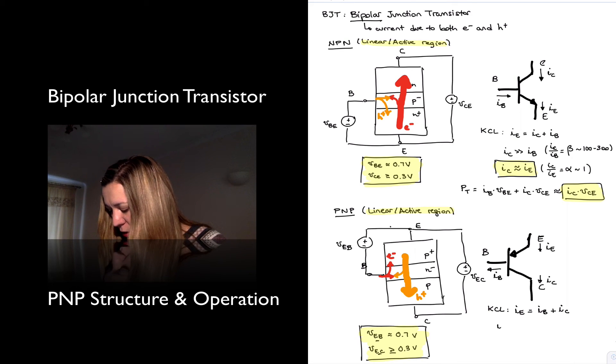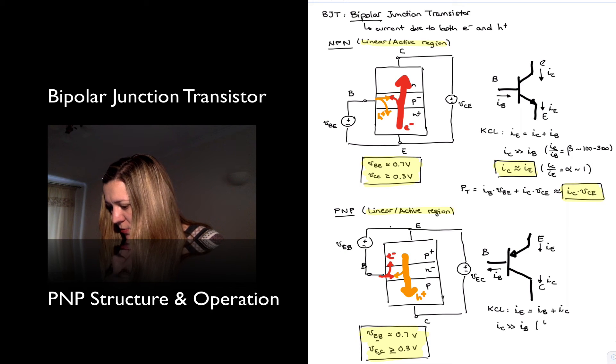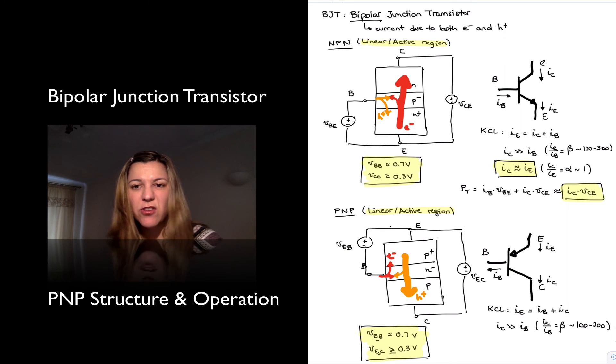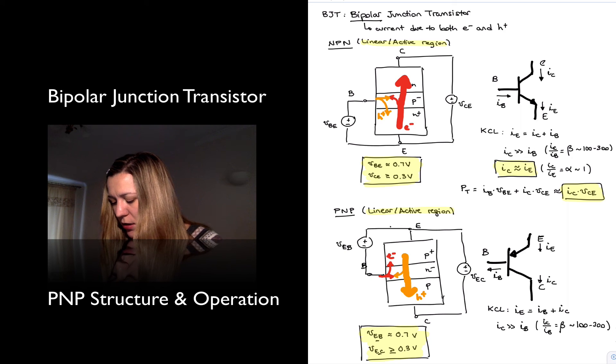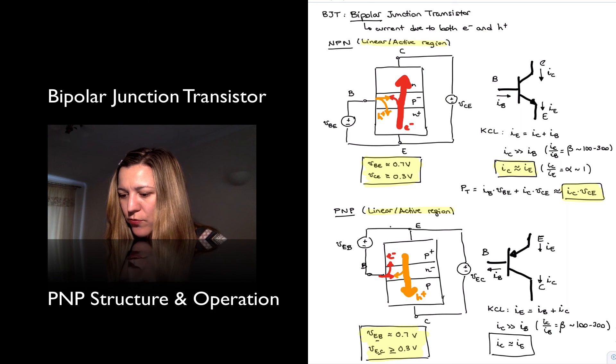And just like before, the collector current is much, much larger than the base current. The ratio is still beta. It's approximately in the range of 100 to 300, so 100 times larger, the collector current and the base current. And so we can make the approximation that the collector current is approximately equal to the emitter current.